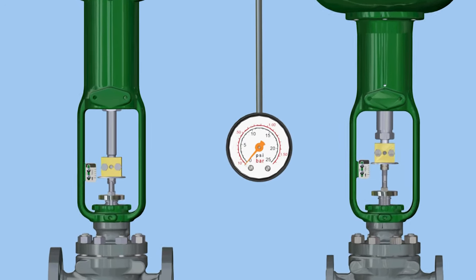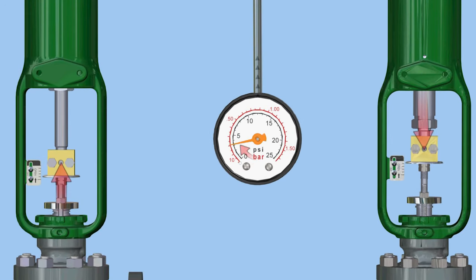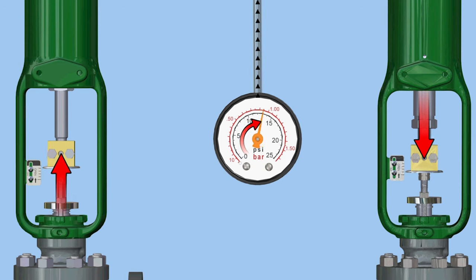As we increase the pressure, the direct acting actuator on the right extends toward the valve assembly. The reverse acting actuator on the left retracts away from the valve assembly.